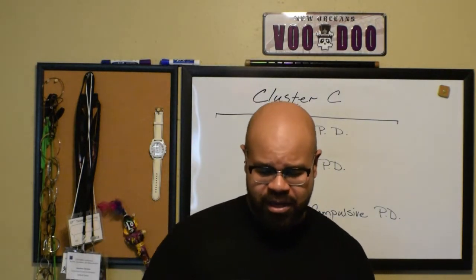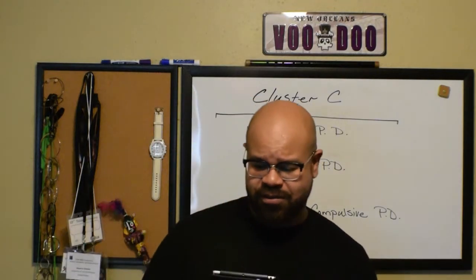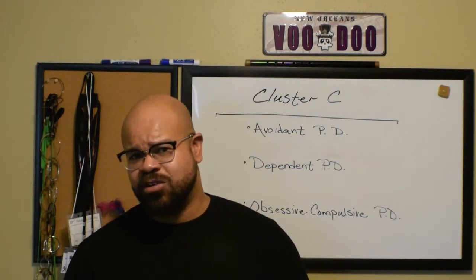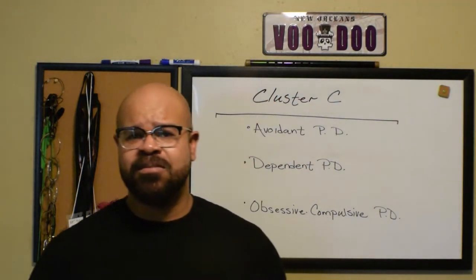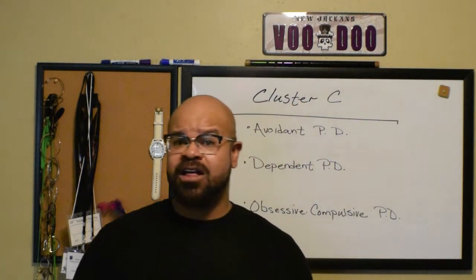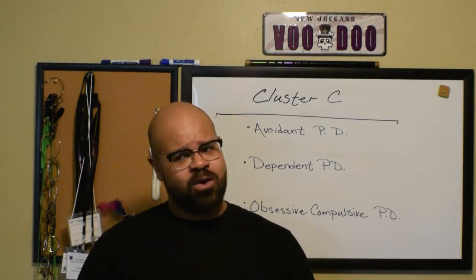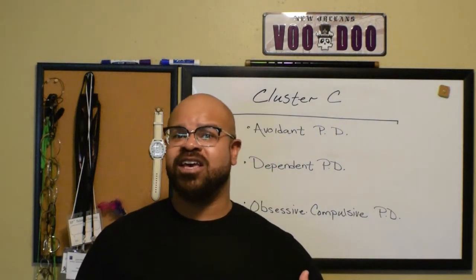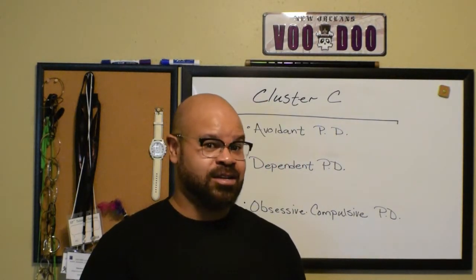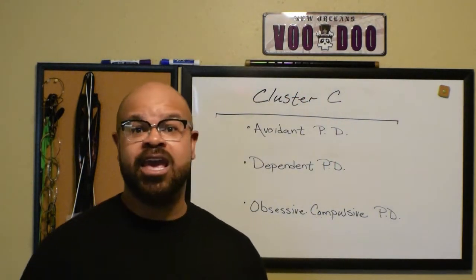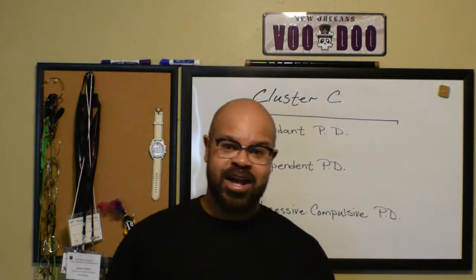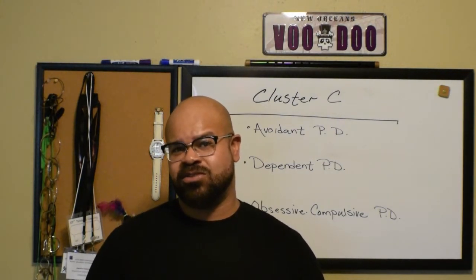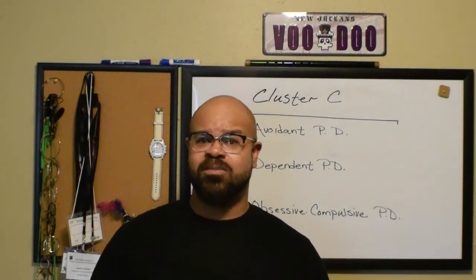Number five — inhibited in new interpersonal situations because of feelings of inadequacy. They're going to hold back in these relationships and not let other people know very much, because they fear: the more you get to know about me, the more you're not going to like me. The behavioral piece you'll see is that in their relationships, they're really going to be withheld in their ability to connect and open up with others.